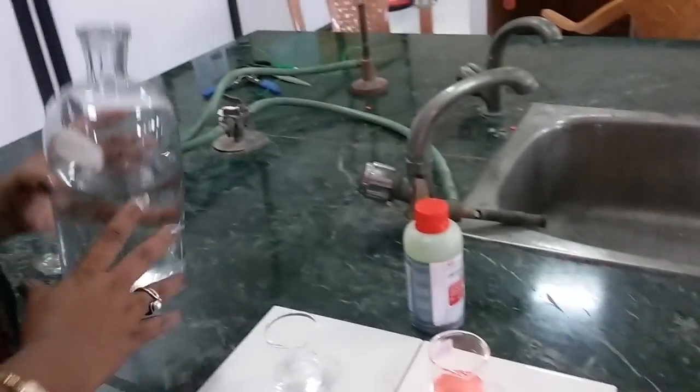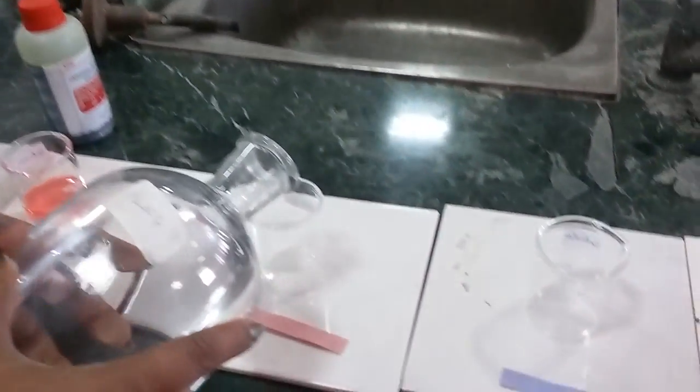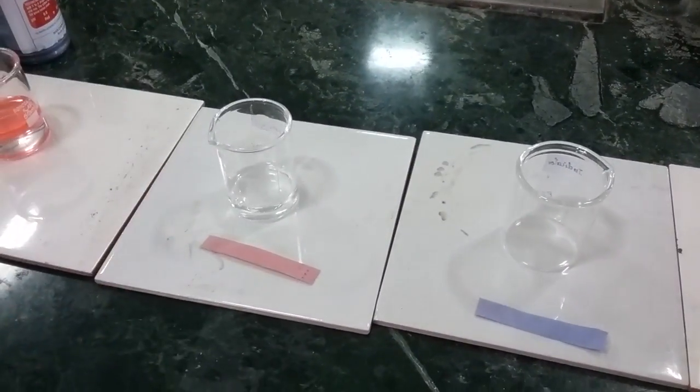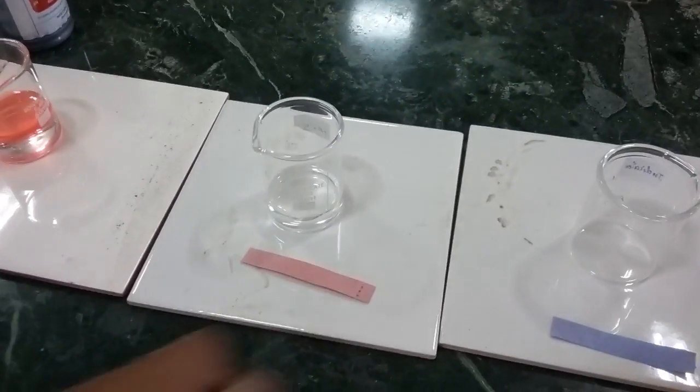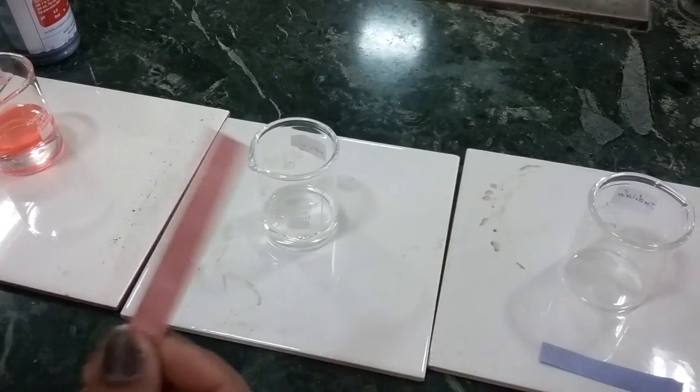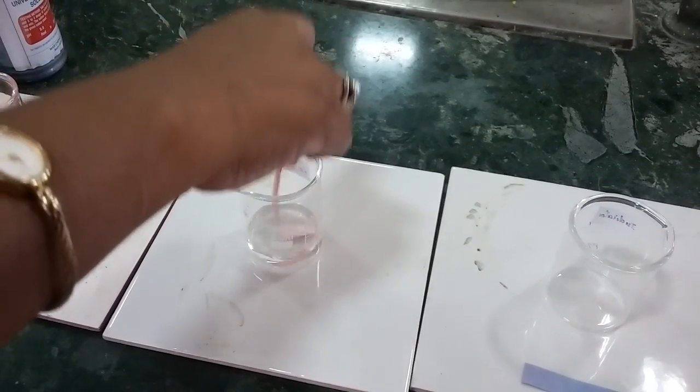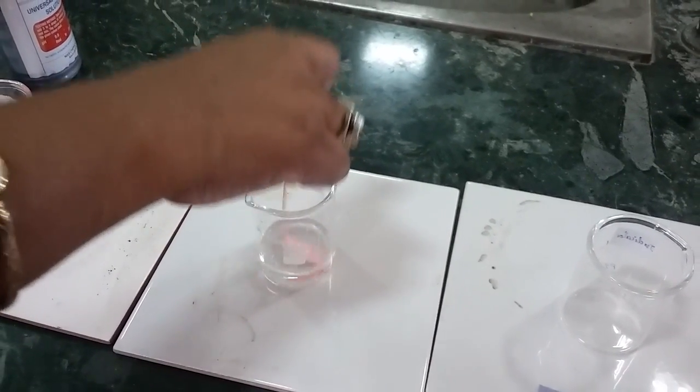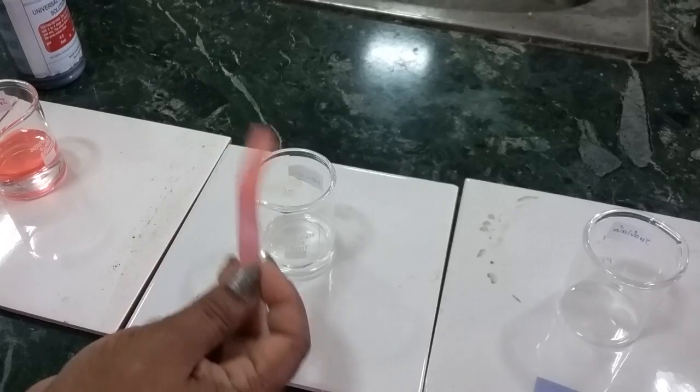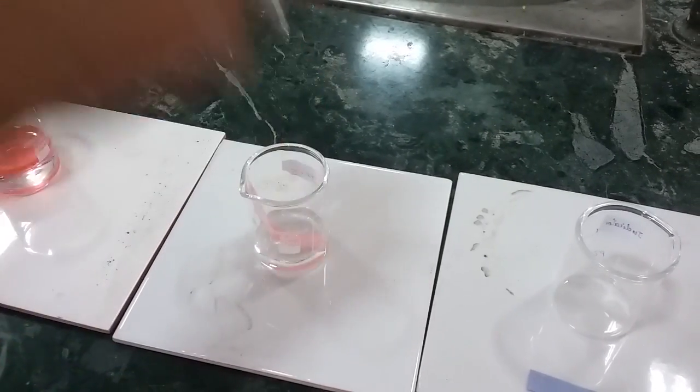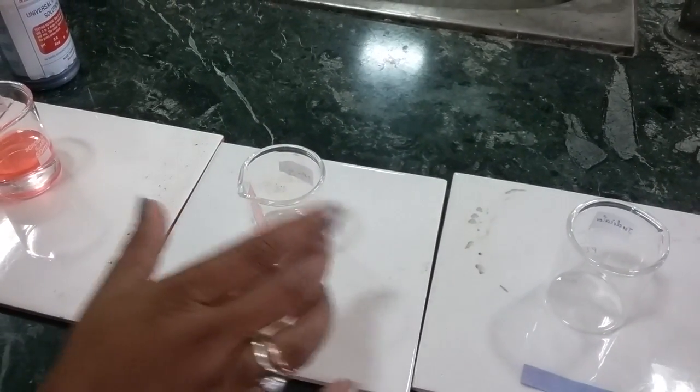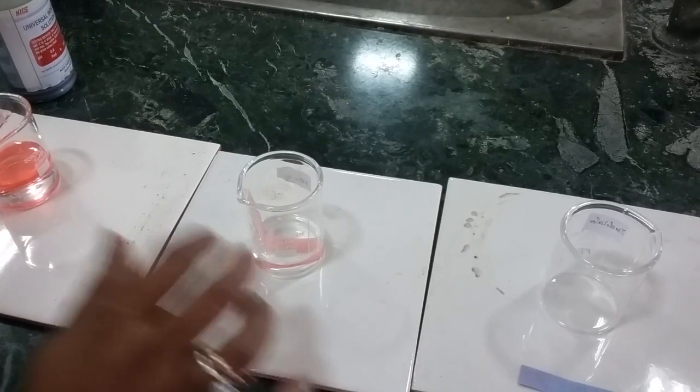Now, if you want to test with litmus paper, we all know blue turns red, but red remains the same. I am going to put red litmus paper into the sulfuric acid. No change. This proves the solution is an acid.